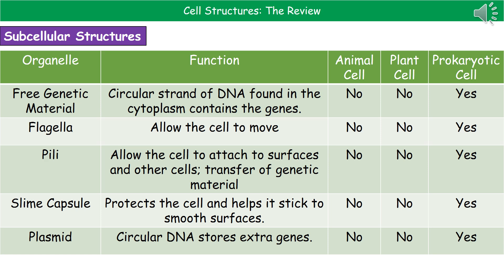The last structure is the plasmid, which is a circular piece of DNA containing additional genes — not the genes needed just to survive, but additional ones. For example, antibiotic resistance genes are commonly found on these plasmids. The good thing about plasmids, as far as bacteria are concerned, is that they can be transferred from one bacterial cell to another, which is how bacterial antibiotic resistance is able to spread. Plasmids are only found in prokaryotic cells, not in any eukaryotic cells.